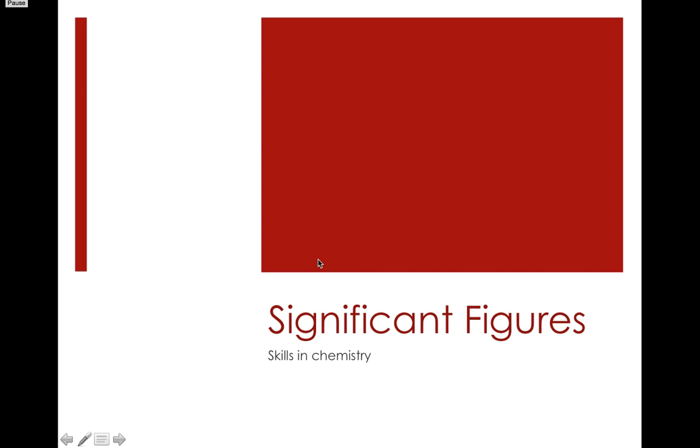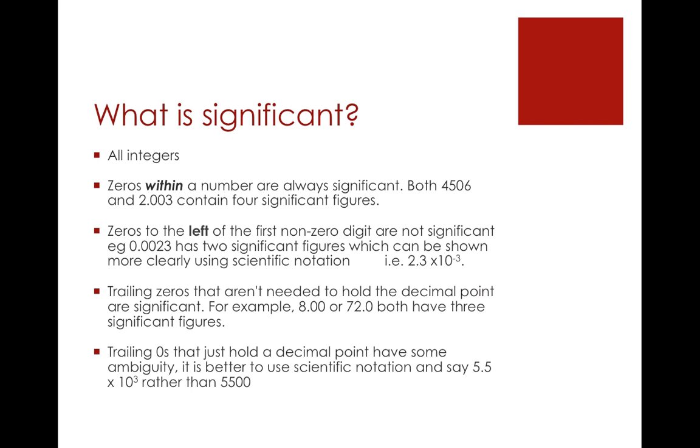Significant figures—this is another important skill that will come up throughout Unit 2, 3, and 4 chemistry. So what is a significant number? Well, any integer, any number that's not zero, is always significant. A zero within a number is always significant. So 4506 and 2.003 both have four significant figures.